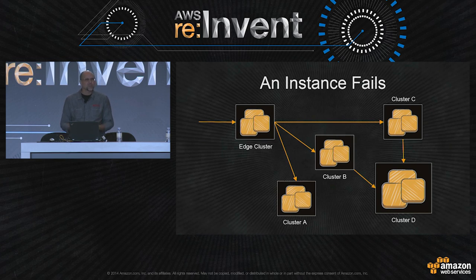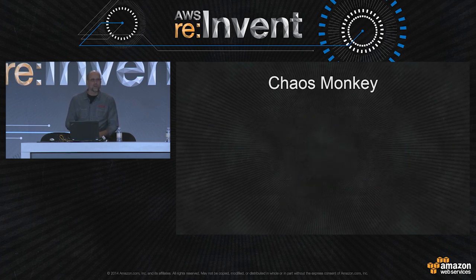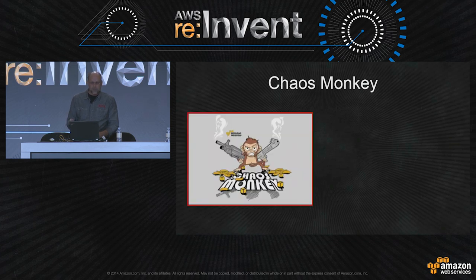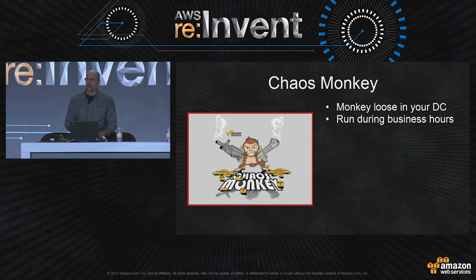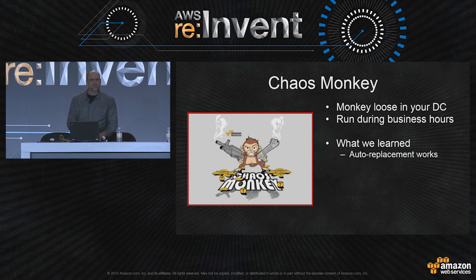We start with the basics — let's start with an instance failing. To address this, we built the first and probably most famous member of the Simian Army, which we call Chaos Monkey. The concept behind Chaos Monkey is that you've just let a monkey loose in your data center — pulling out cables, pulling out boxes, messing with the cooling system. He's fairly well-behaved because we only let him loose during business hours. We'd rather have things happen during the day when we can respond to a problem instead of at 2 o'clock in the morning. What we learned was straightforward: if you have stateless systems, auto replacement using ASGs works quite well. Your system can get killed off, a new one spins up, and it's really relatively straightforward. There's really no reason for somebody not to adopt this kind of technology.